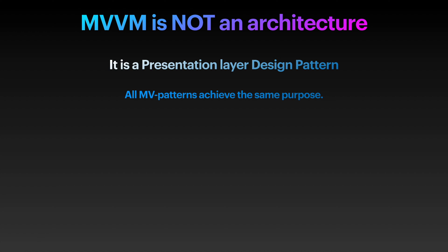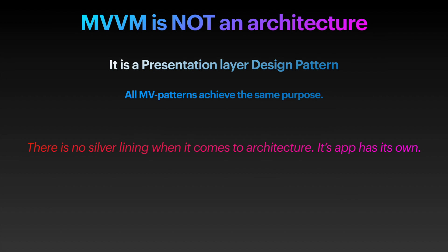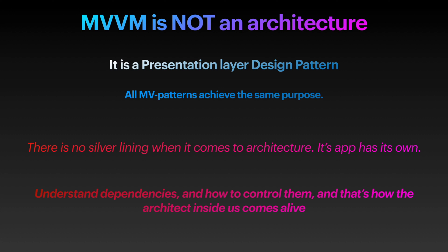Sure, MVVM really helps with decoupling the view from the view model. It helps with state management — I will not deny that. It really seems like a solid way to structure a presentation layer. But remember, our application is so much more, and focusing on the rest of the responsibilities — how to abstract navigation, analytics, networking, all those beautiful things — is where the real engineering and architecting begins. Don't tunnel vision into the presentation layer. Understand that there is no silver lining when it comes to architecture. Each application has its own. Understand the dependencies and how to control them. This is how the architect inside us comes alive.